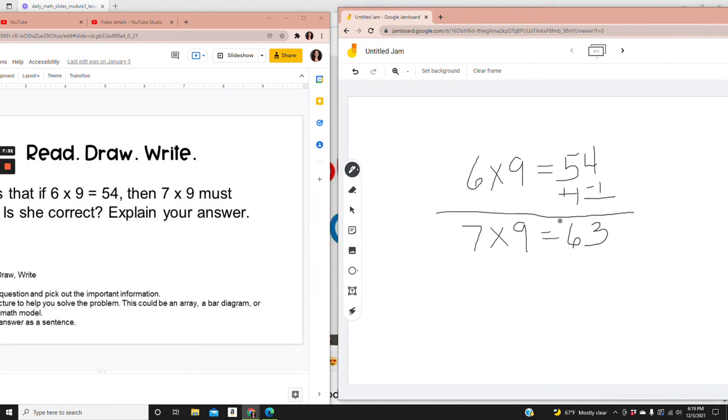Remember also that we could check this answer by adding the two digits together in the product. 6 plus 3 equals 9. So I've checked my work.